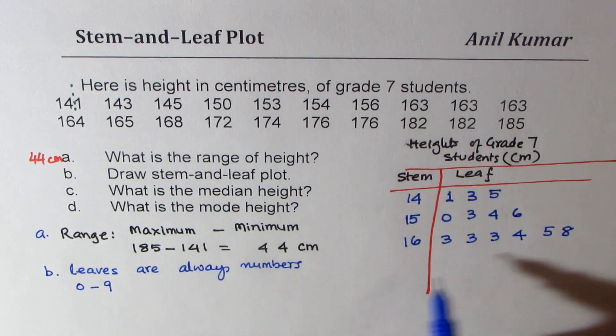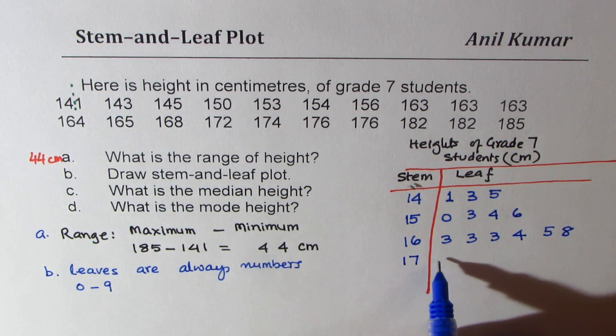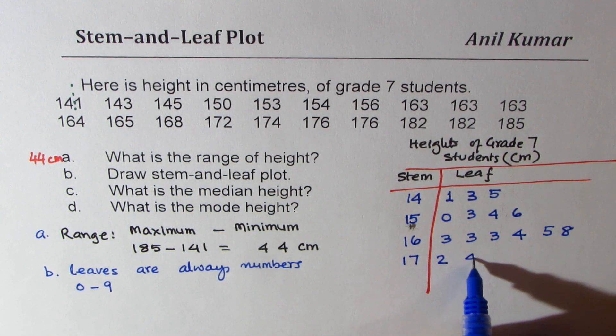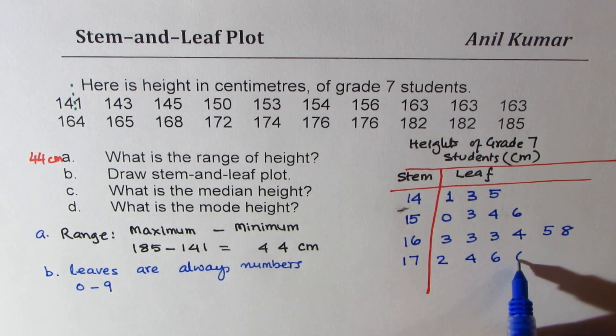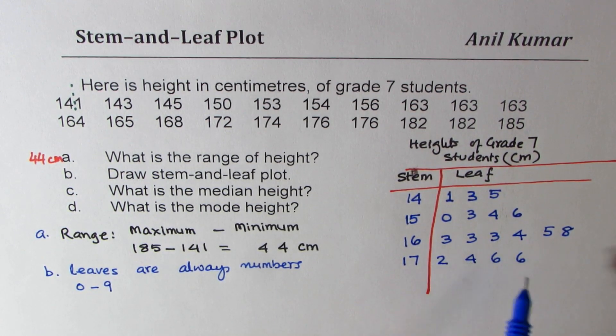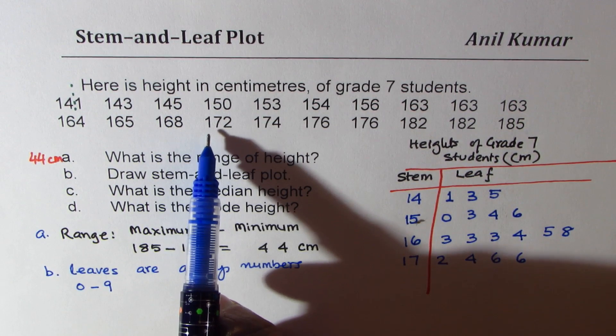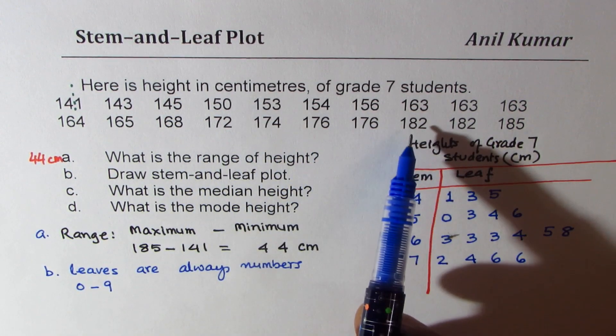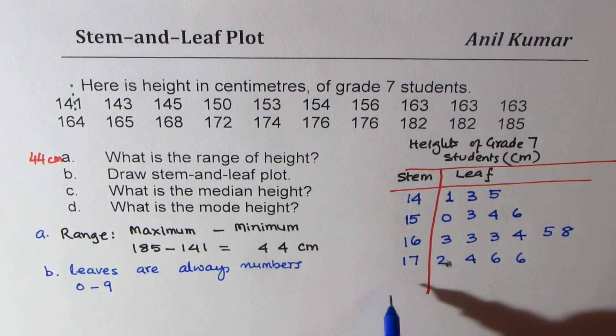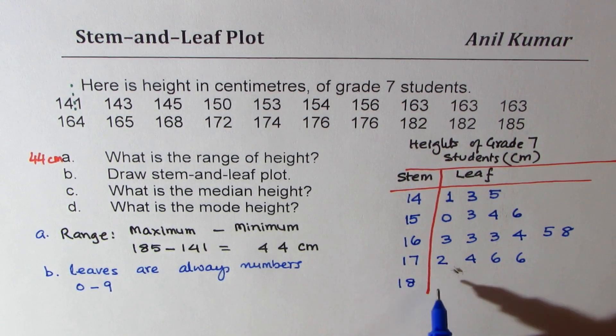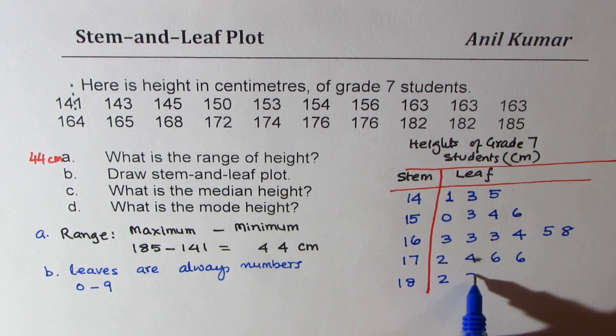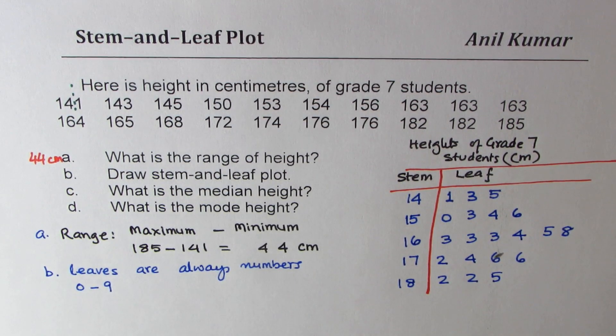172, that means 17 comes here, 2. 174, 176, 176. So we have in 17: 2, 4, 6, 6. It's a good idea to check. And 182, 182, 185. So we'll write 18, 2, 2, 5, 2, 2, and 5.